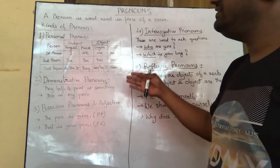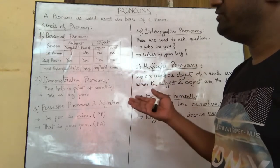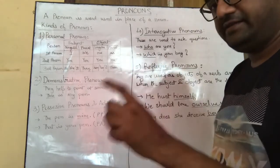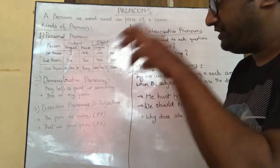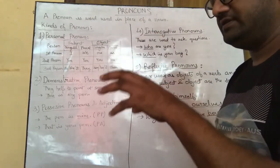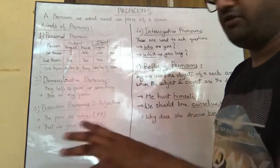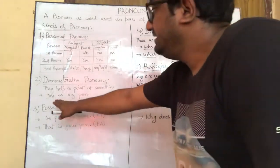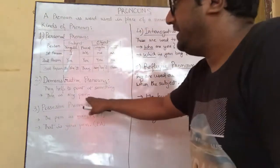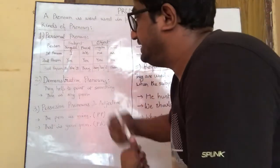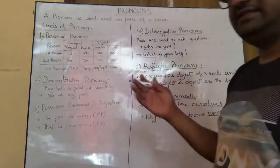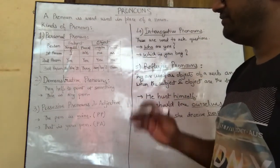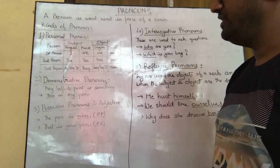Next is the demonstrative pronoun. Demonstrative pronouns help to point at a particular thing — either a subject or object. For example: 'This is my pen.' The word 'this' over here is an example of a demonstrative pronoun.